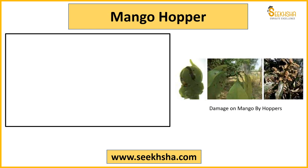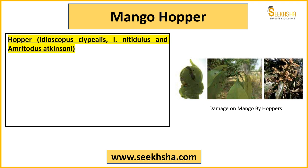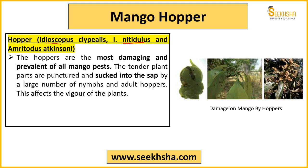Let us quickly start now. Mango hopper — kisi bhi pest ya kisi bhi disease ki jab hum baat karte hai, toh botanical name ya scientific name bahut important ho jaata hai, kyunki woh paper mein aksar puchha jaata hai. Mango hopper ke case mein jo mainly jo hoppers isme attack karte hai, unme ek toh aata hai Idioscopus clypealis, uske baad I. niveosparsus, aur Amritodus atkinsoni.